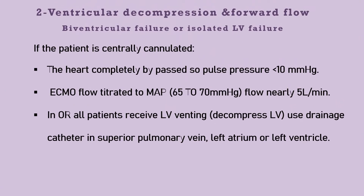In conditions where centrally cannulated ECMO is present, the heart is completely bypassed, so pulse pressure will be less than 10 mmHg. ECMO flow can be titrated to maintain mean arterial blood pressure 65 to 70 mmHg with flow of nearly 5 liters per minute. In the OR, all patients can receive LV venting — decompressing the left ventricle using a drainage catheter in the pulmonary artery, left atrium, or left ventricle. This is done on the bypass machine.